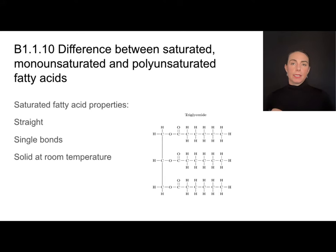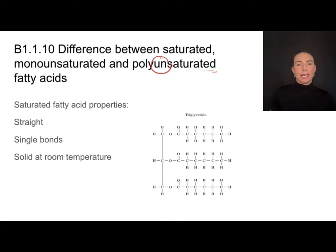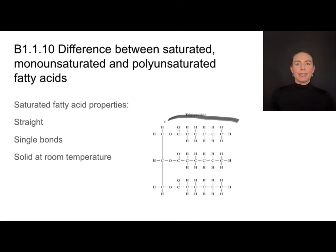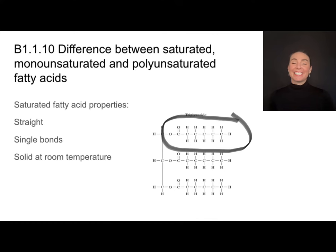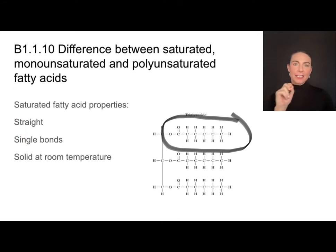Thinking about fatty acid tails, they aren't all identical. They can come in several forms: saturated, monounsaturated, and polyunsaturated. Saturated fatty acids have a straight chain in which all of the carbons are connected by single bonds, and they are usually solid at room temperature. A helpful way to remember this is with S's: saturated fatty acids have single bonds, are straight, and are usually solid at room temperature.